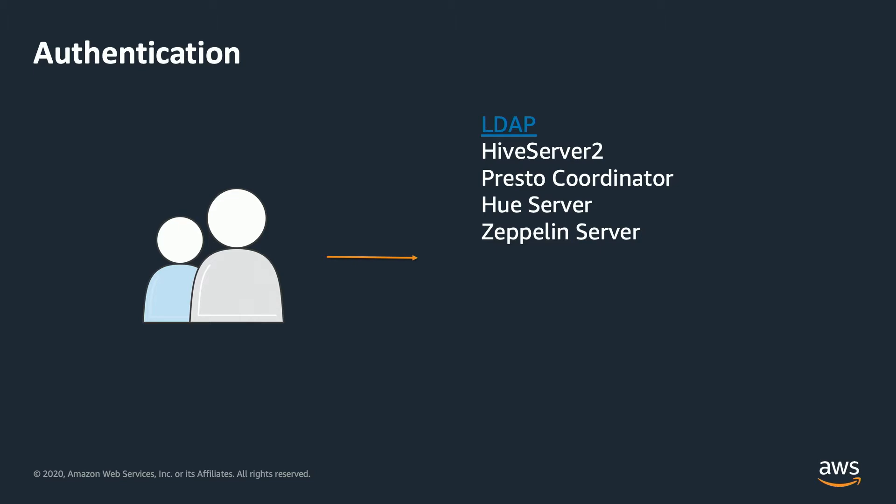By using LDAP authentication, you can integrate with Active Directory and your Active Directory users could log in directly to those web UIs and have access to those resources. Another way that customers can configure authentication to their EMR clusters includes using the EC2 key pair or SSH login to your cluster. By logging into your cluster via SSH, users will have the ability to use the EC2 key pair that they used when the cluster was created.